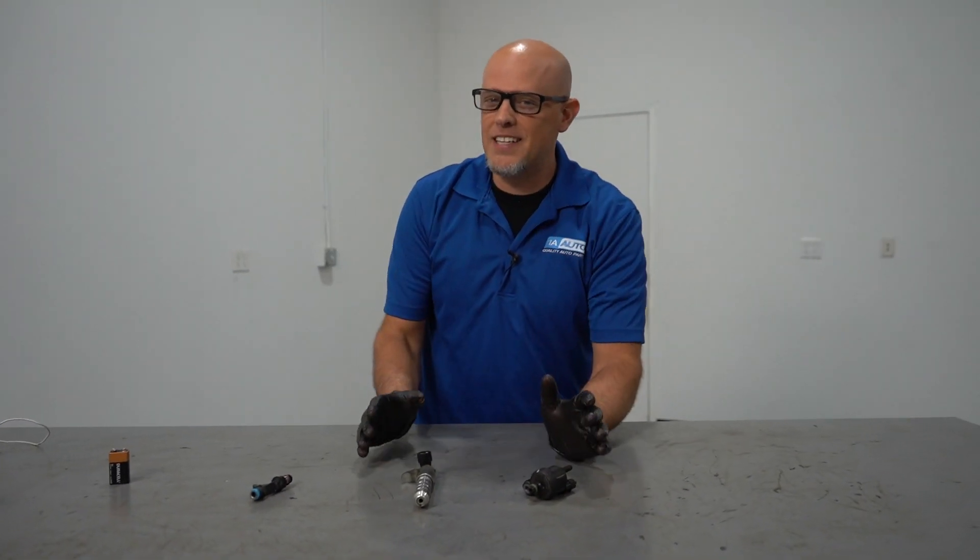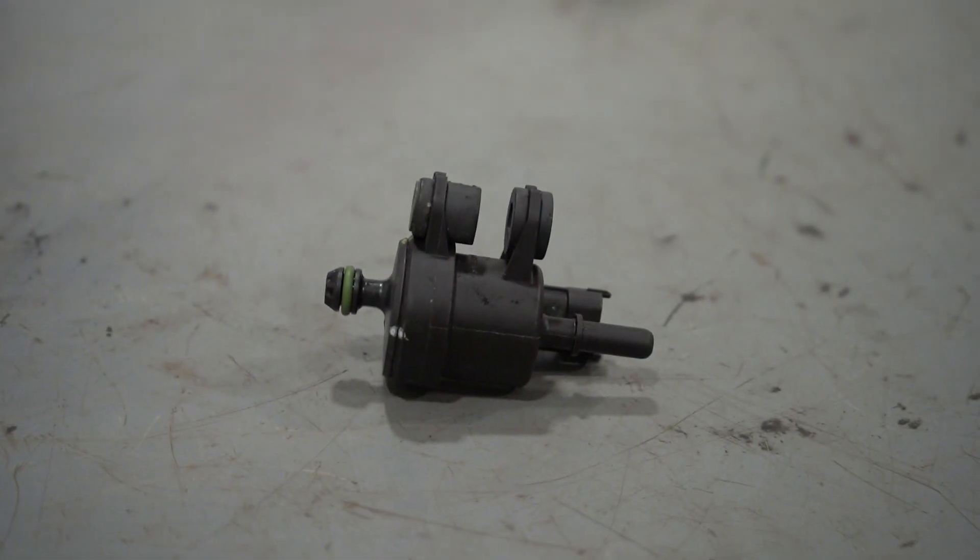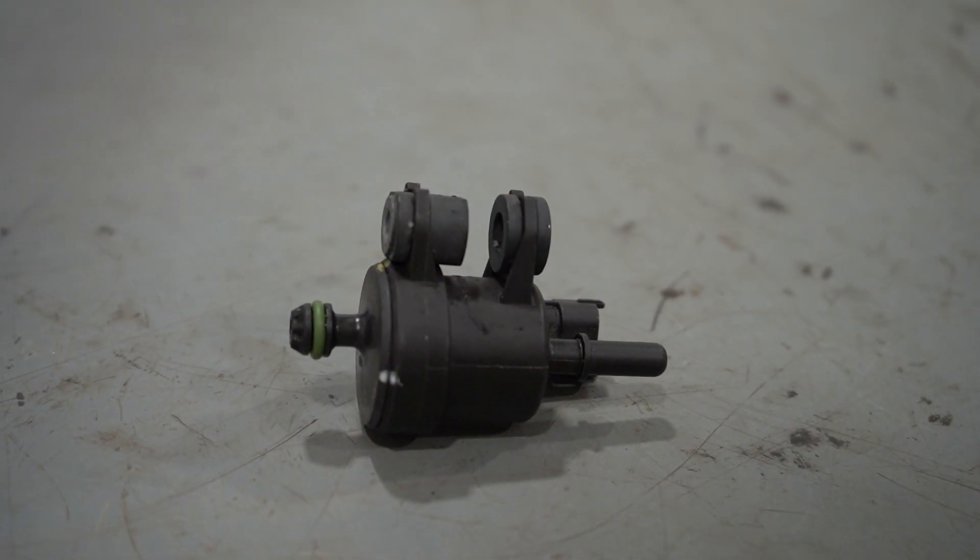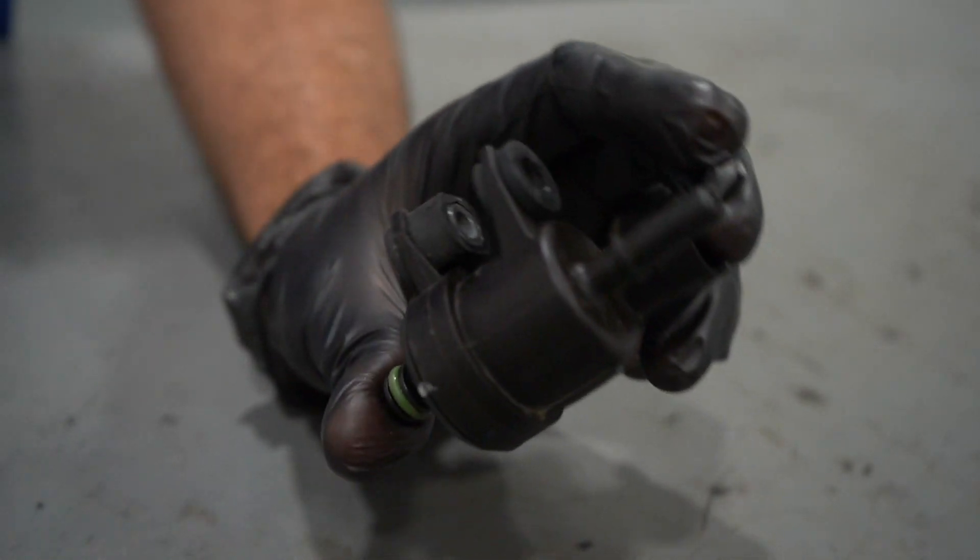Now your vehicle has many different solenoid valves to do different jobs. This happens to be an EVAP purge solenoid. What this valve does is it controls the amount of vacuum from the intake manifold into the fuel tank.